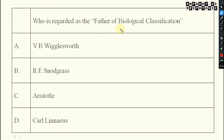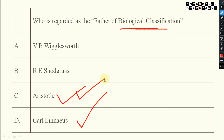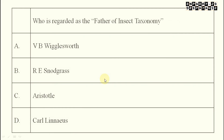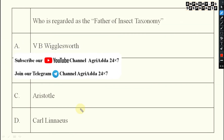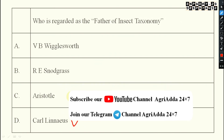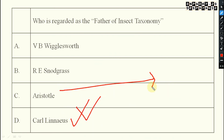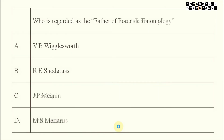Next: who is the father of biological classification? There may be some confusion — different books say different things — but Aristotle is regarded as the father of biological classification, while Carl Linnaeus is regarded as the father of insect taxonomy. Please remember: Aristotle is father of biological classification, and Linnaeus is father of insect taxonomy.